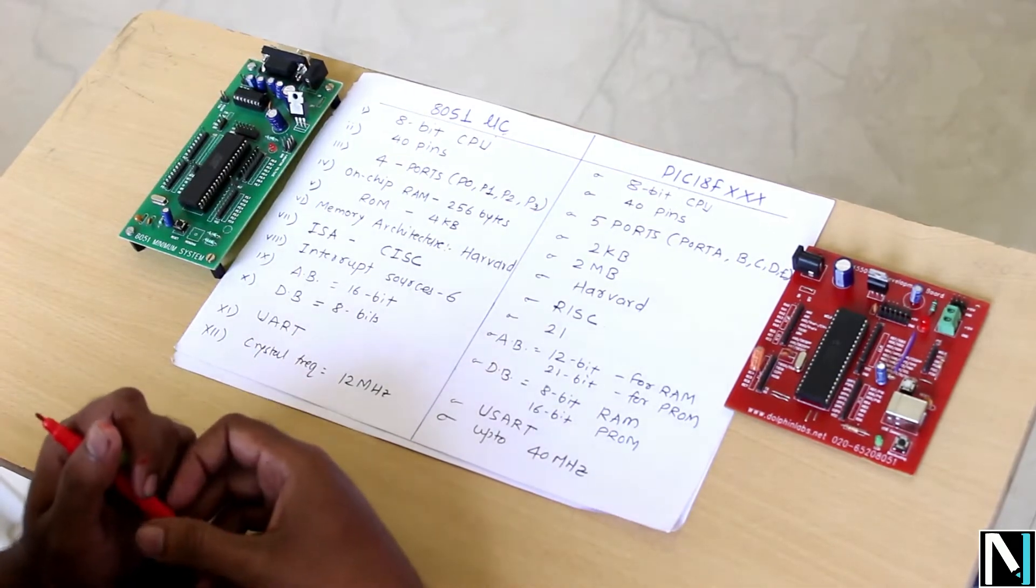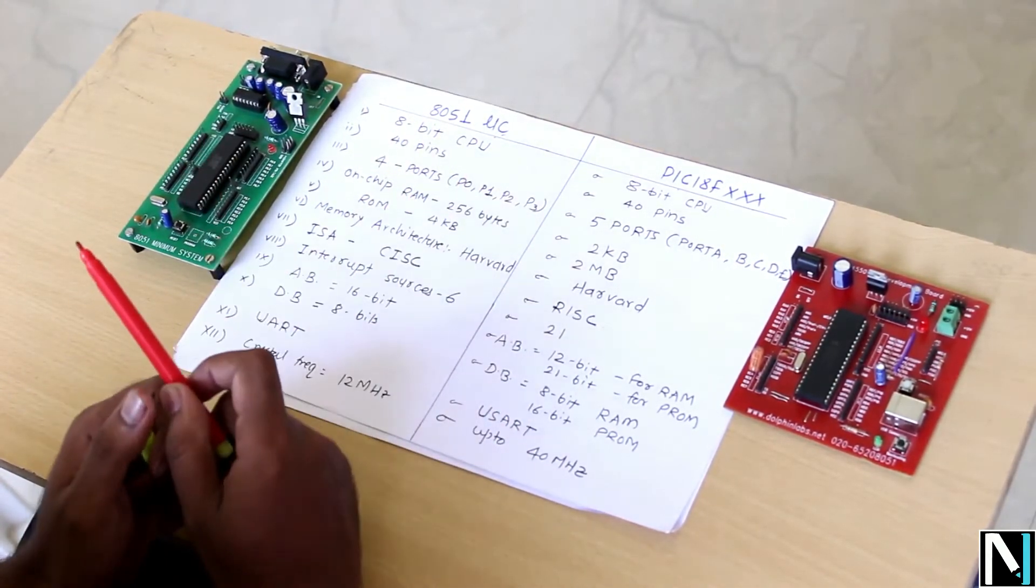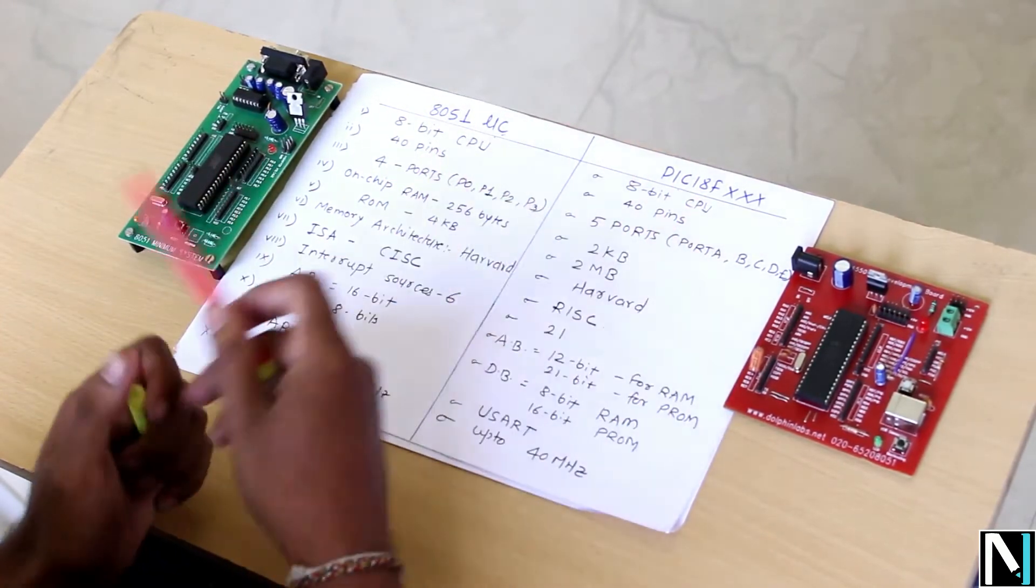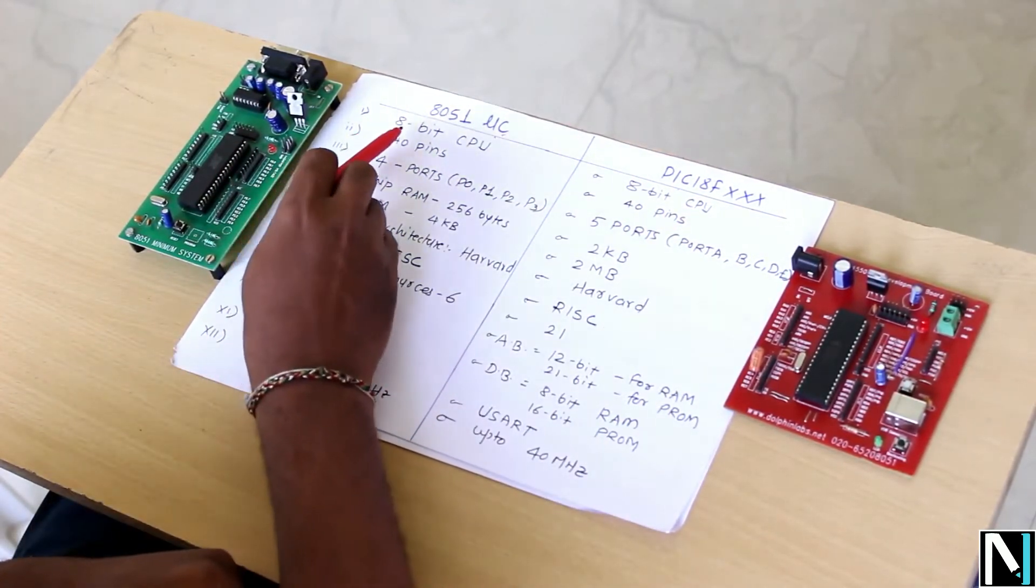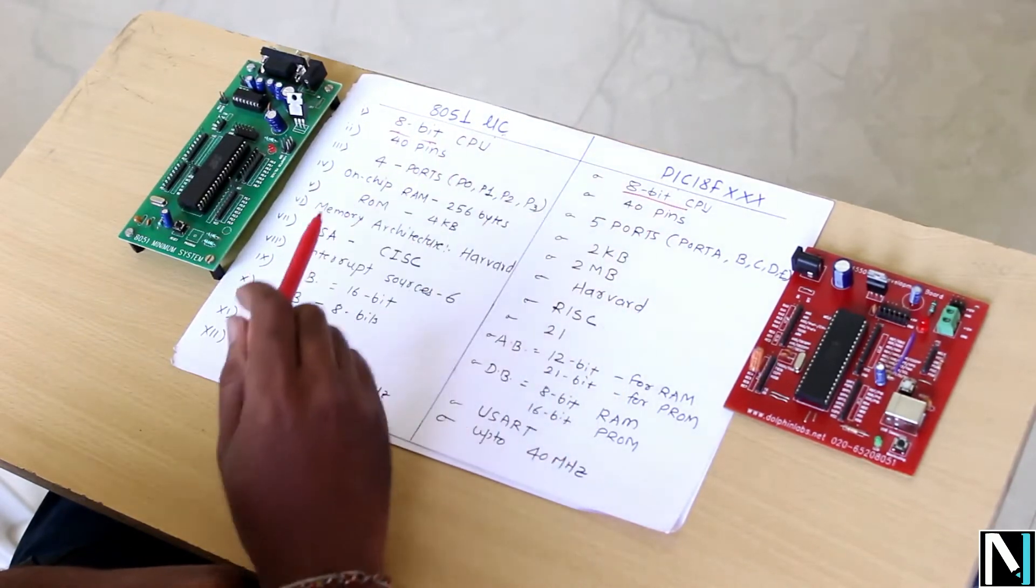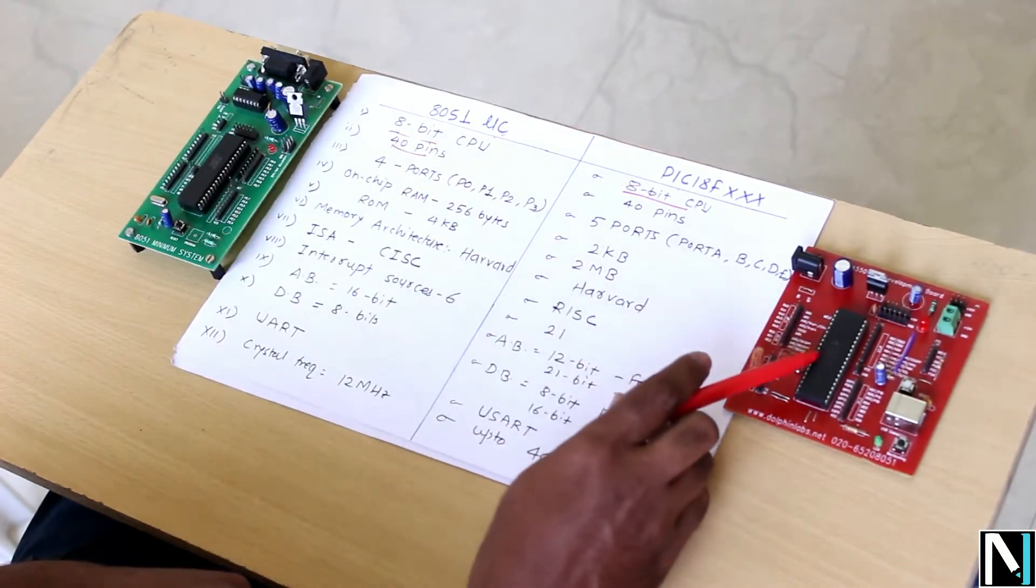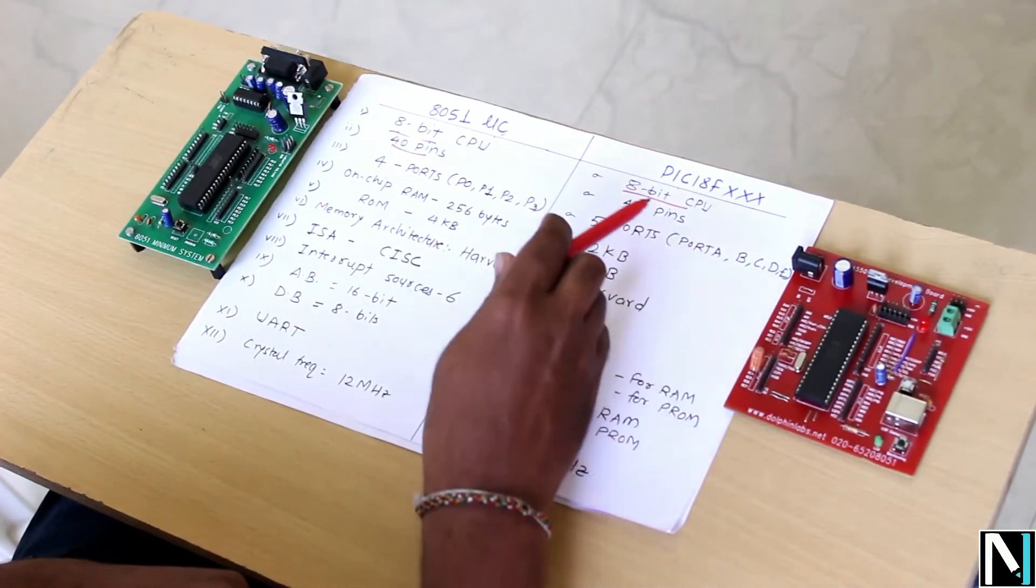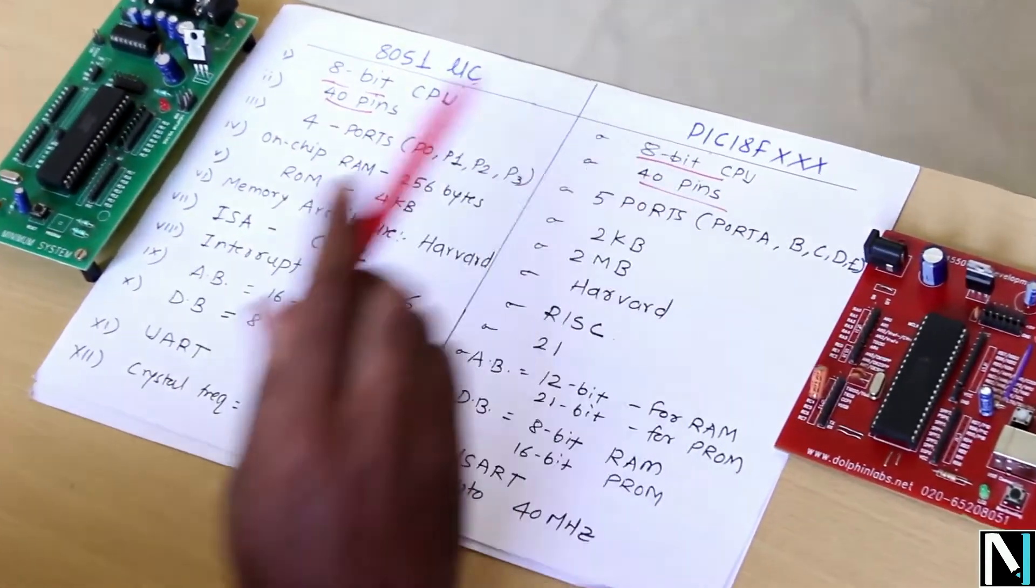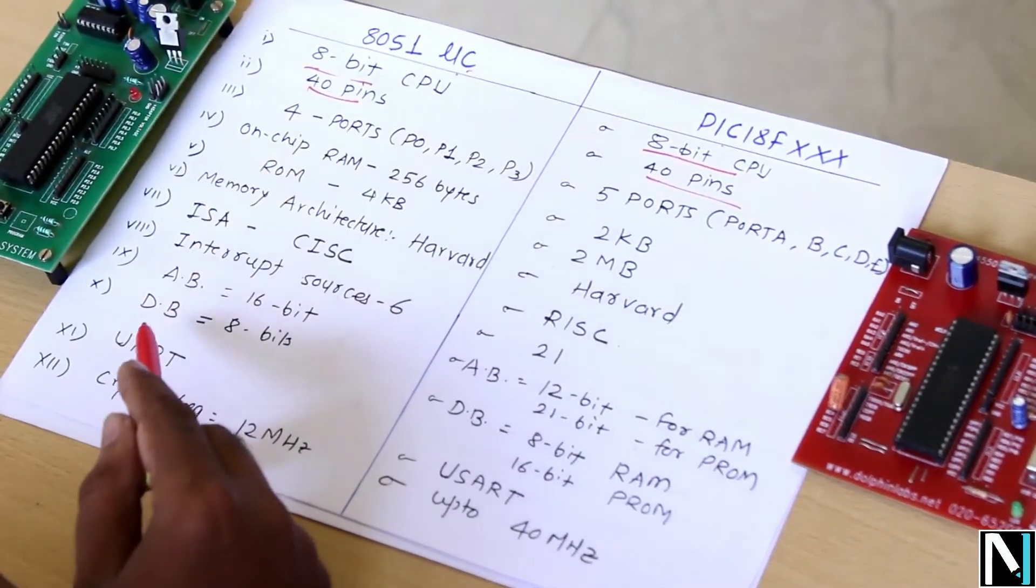Before comparison, I would like to share about the CPU of 8051 and the PIC 18F. It has an 8-bit CPU, and in case of PIC 18 also it is an 8-bit CPU. The controller 8051 is 40 pins and the PIC 18 is also 40 pins. So both are 40 pins. That is the similarity. Now we'll go with the comparison points.